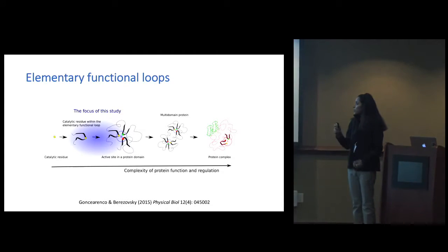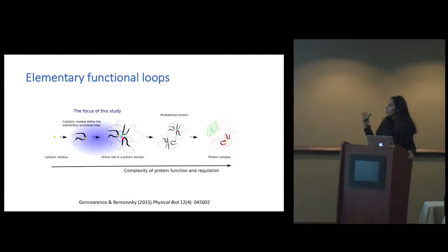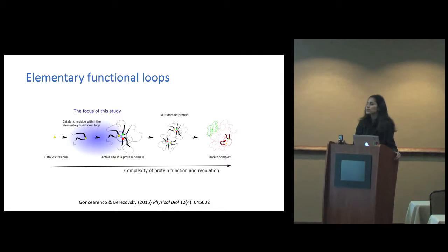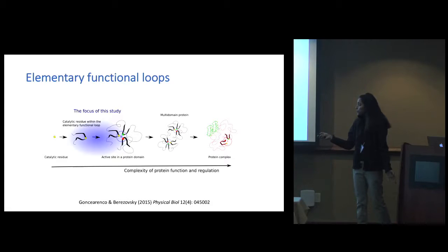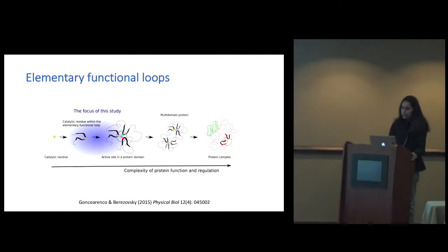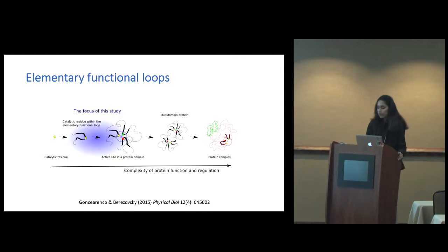Our research is based on the concept of evolutionary functional loops proposed by Gonserenko and Brzozowski. They postulate that protein functions are merely a combination of ancestral activities carried out by ancestral forms of protein fragments called elementary function loops. These have a catalytic residue, one or more in the loop, and they combine to form active sites, multi-domain proteins, and then complexes. It's a combination of canalized loop structures that give rise to domains.